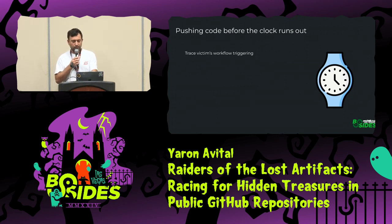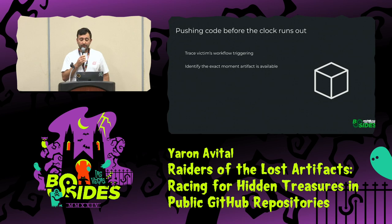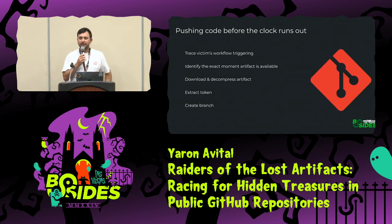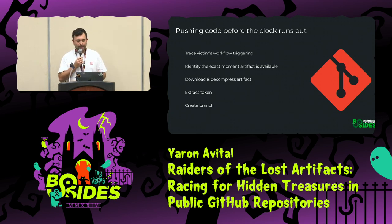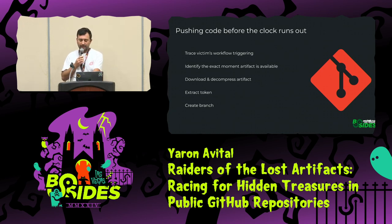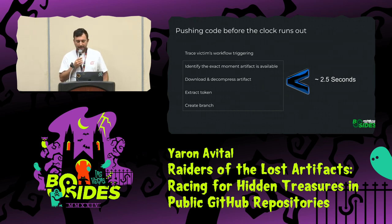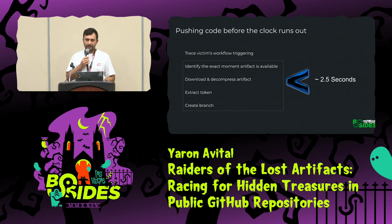So I needed to do the following: trace workflow triggering, identify the exact moment the artifact is available, download the artifact, extract the token, and create a branch. Why create a branch? Because I wanted to prove I had write permissions, and creating a branch requires write permissions. I needed to do all of the above under two and a half seconds — that's the time between the artifact becoming available and the job dying, which means the token is invalidated.